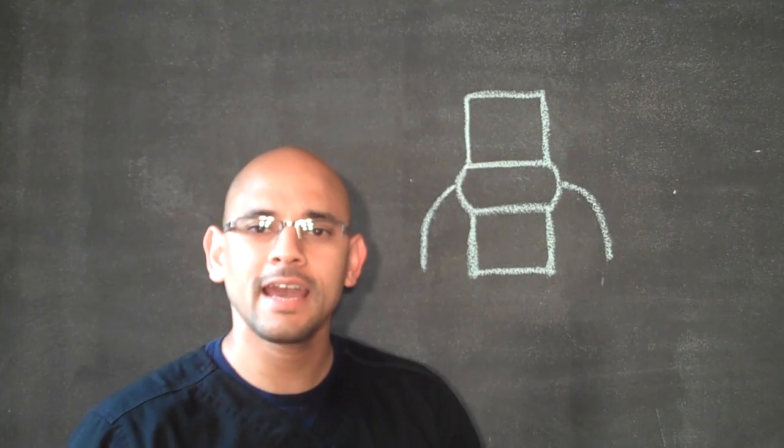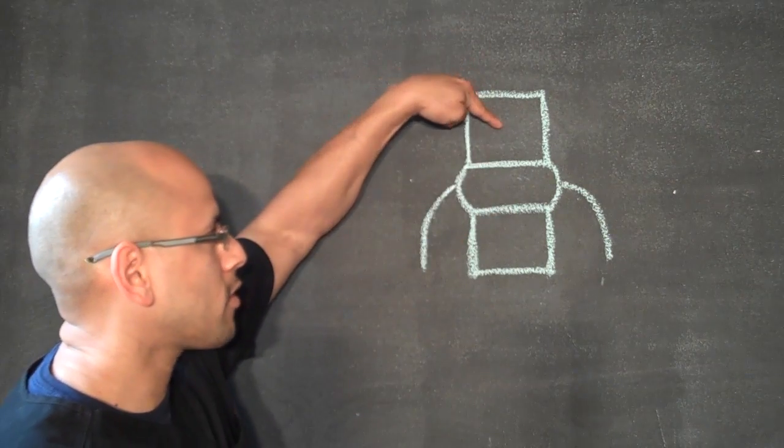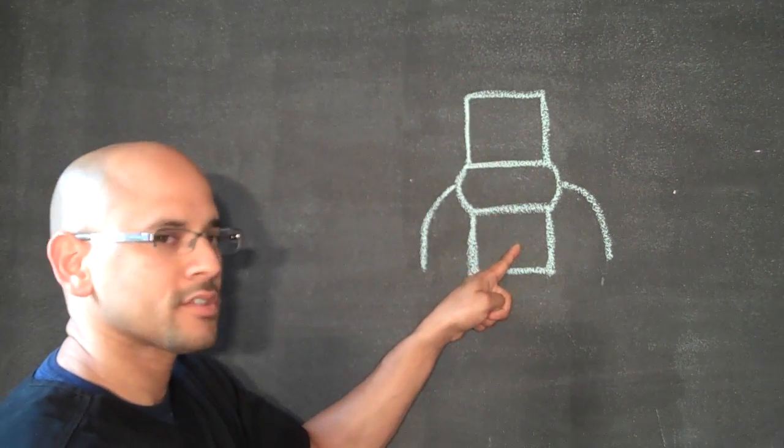But first let's go over the anatomy so you can understand how everything works inside the body. Over here I have a drawing of a vertebra and a vertebra on the bottom as well. So we have two vertebras.